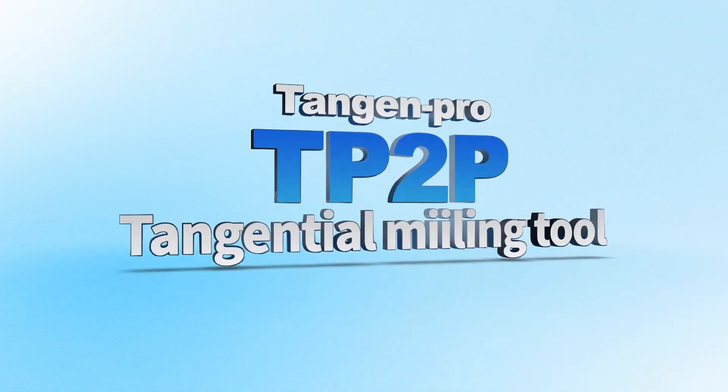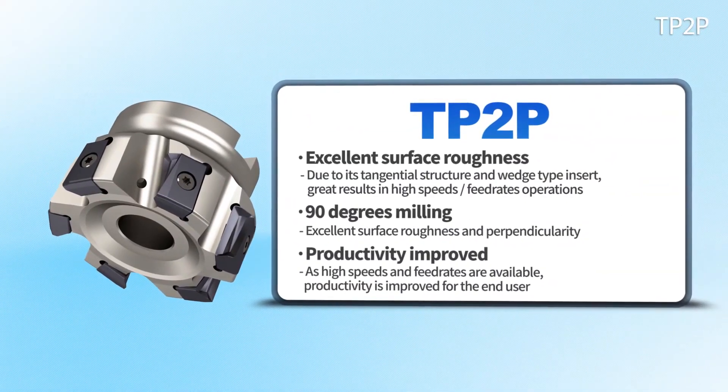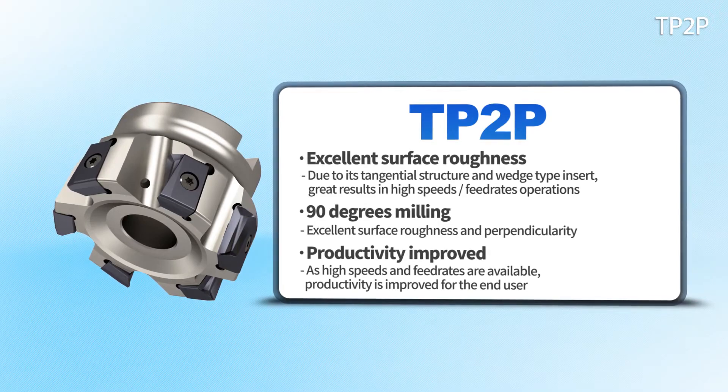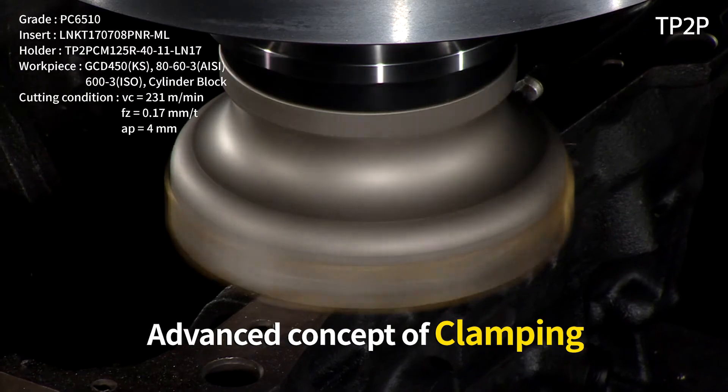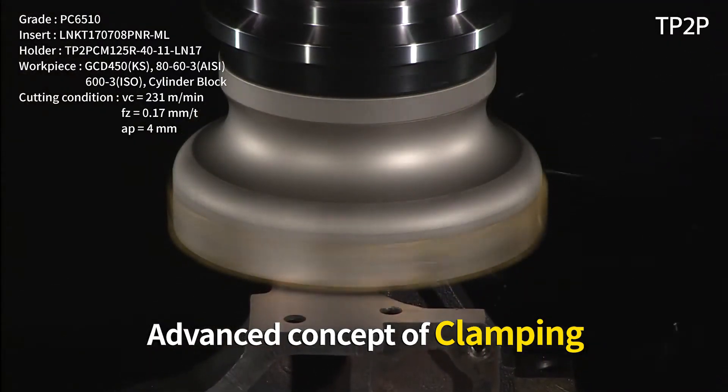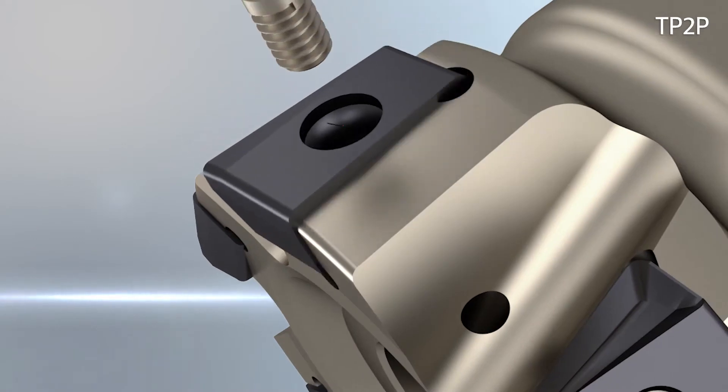The TP2P installs a wedge-shaped insert that enables a strong clamping structure as well as precise right angle machining. It is a tool that uses an advanced concept of clamping. Clamping becomes stable by installing a wide clamping surface.